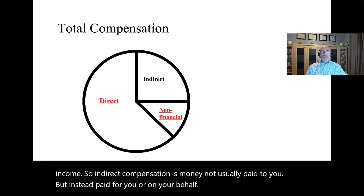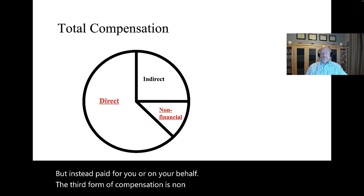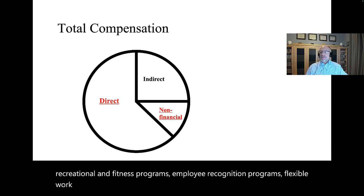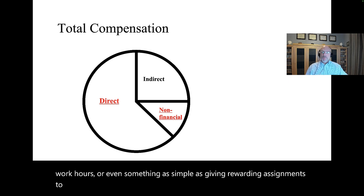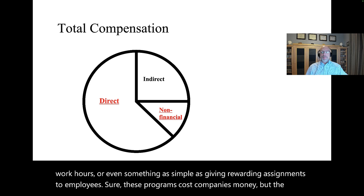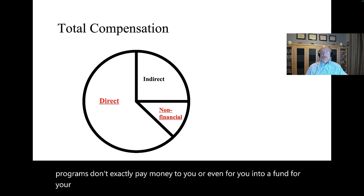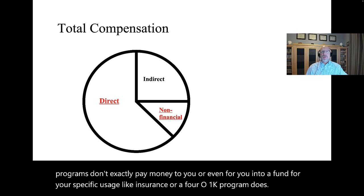The third form of compensation is non-financial. This includes things like recreational and fitness programs, employee recognition programs, flexible work hours, or even giving rewarding assignments to employees. Sure, these programs cost companies money, but they don't exactly pay money directly to you or into a fund for your specific usage like insurance or a 401(k) program does.